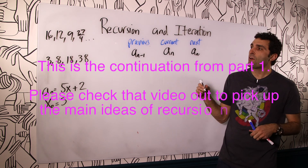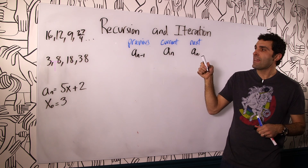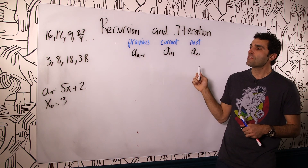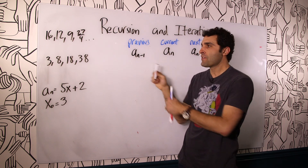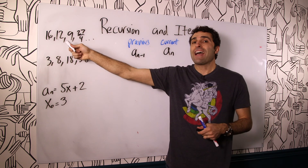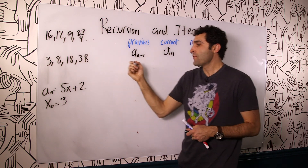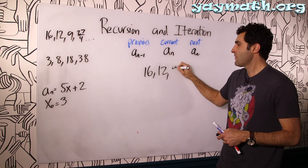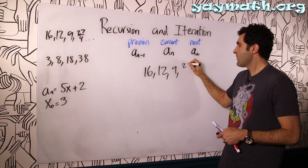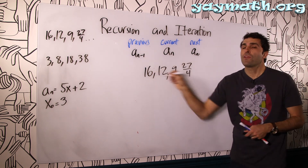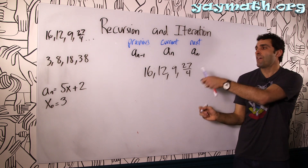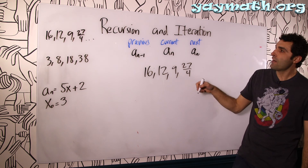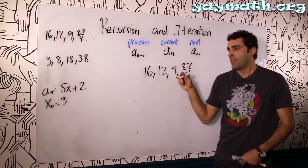In this next part, instead of being given the rules and finding the sequence, you're given the actual sequence itself. Can you come up with the rule that defines it? Can you create the recursive formula — a formula that builds on itself?